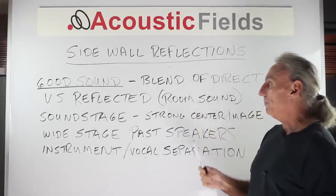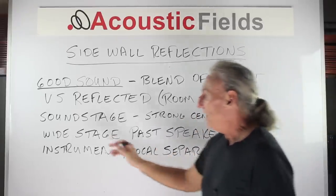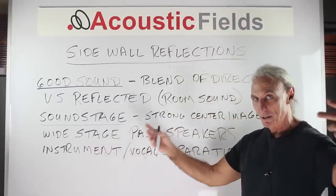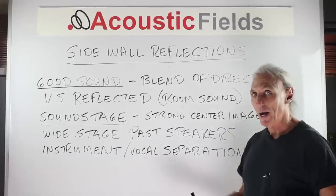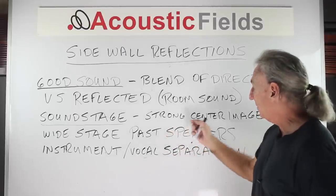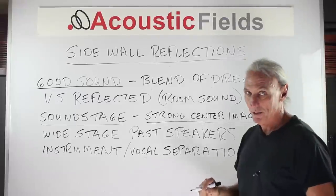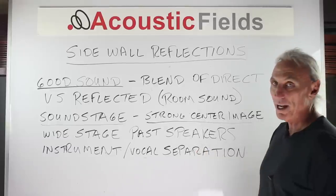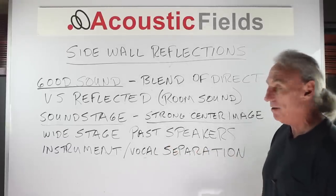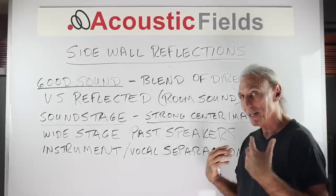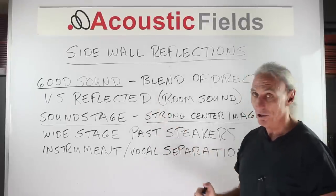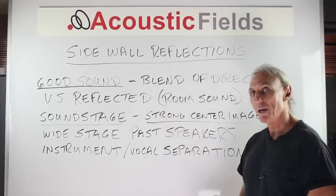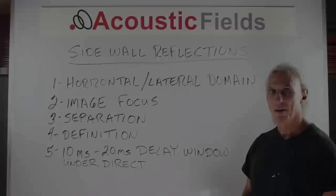Good sound is a blend of direct versus reflected energy. Our sound stage is the area between our speakers — hopefully it extends past our speakers, and our speakers disappear when we close our eyes. We have a sound stage in front of us with a strong center image, so all our vocals are right in the middle between the speakers. We have a wide sound stage that extends past the speakers, and we have instrument and vocal separation so we can hear everything. That's the goal.